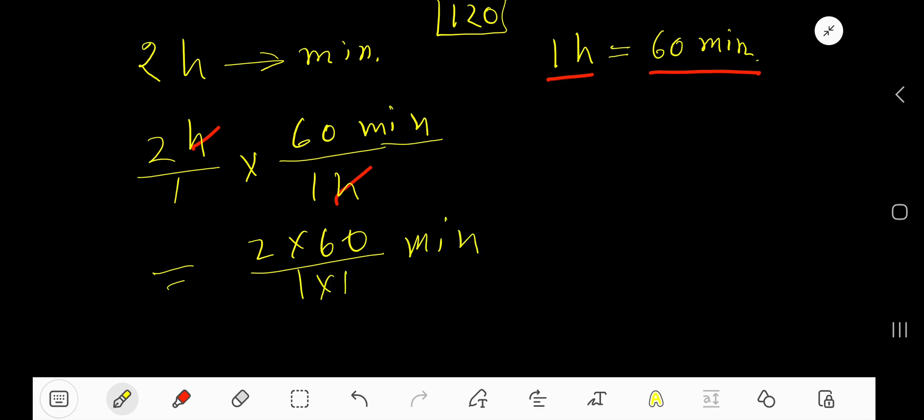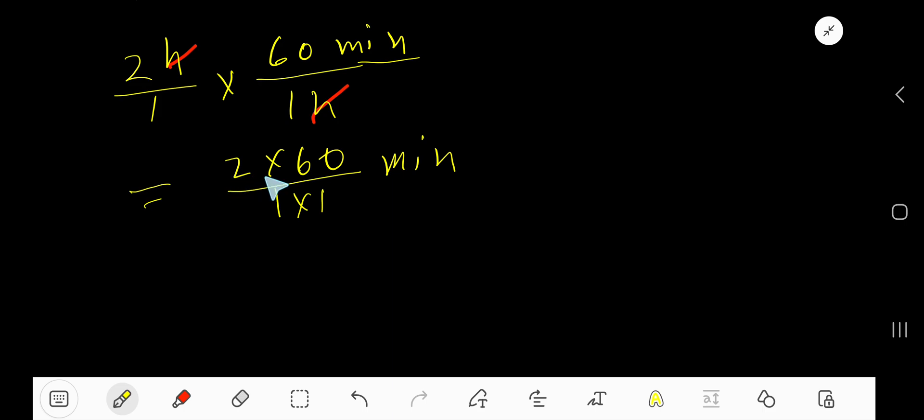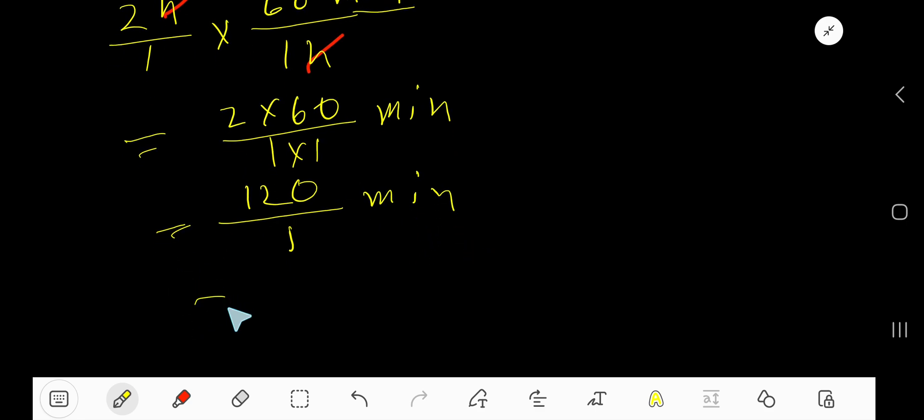This is minutes. 2 times 60 equals what? Just multiply the non-zero digit: 6 times 2 is 12, then attach the number of zeros. 1 times 1 is 1 minute. So 120 divided by 1 means 120 minutes, and this is the answer.